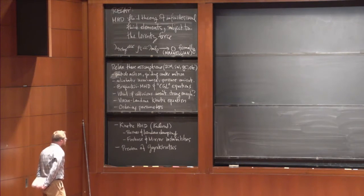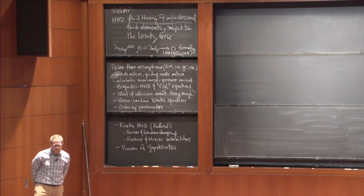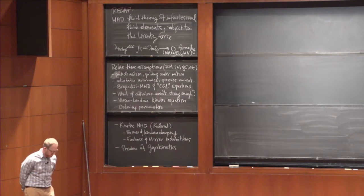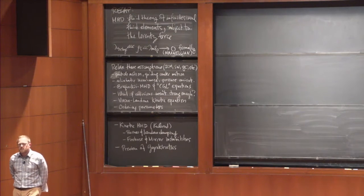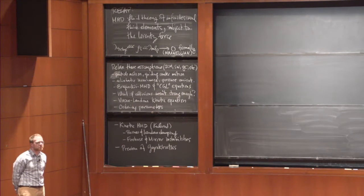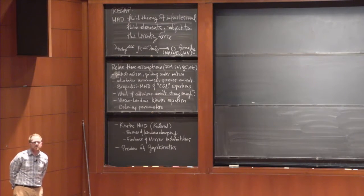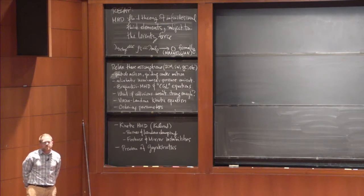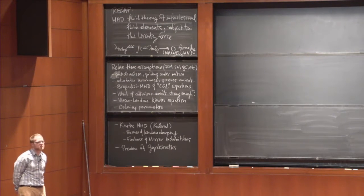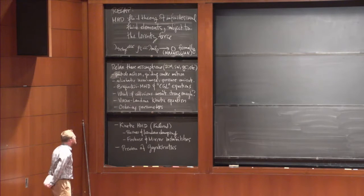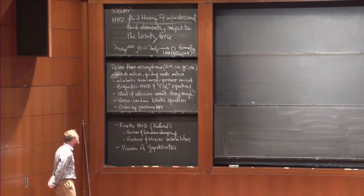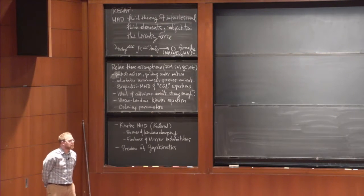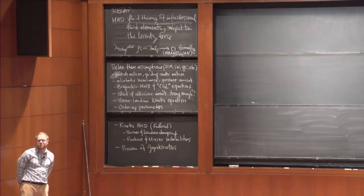Today we're going to relax these assumptions. The last thing I said in the first lecture was that a lot of systems of interest to modern astrophysical fluid dynamics aren't actually in the ideal MHD regime, despite the resistivity being small—because of issues related to the collisional mean-free path. Some of those systems include the intracluster medium of galaxy clusters, the solar wind, and near the galactic center (Sgr A*). Ideal MHD breaks down there, and that's what this lecture is about.